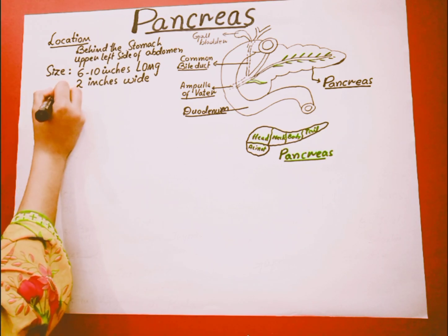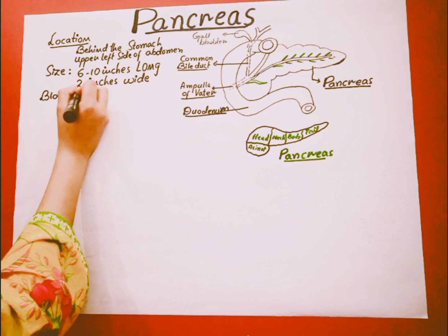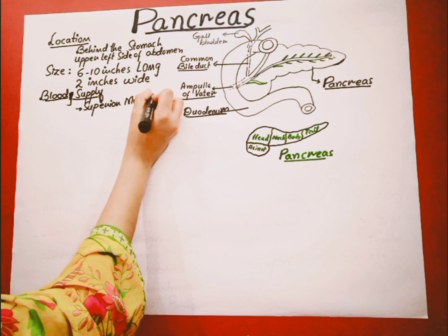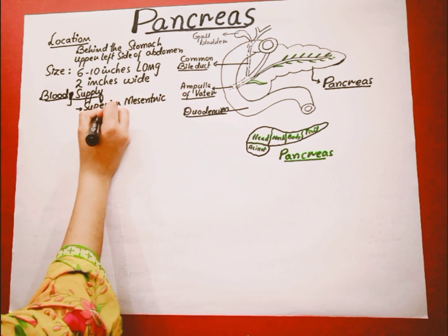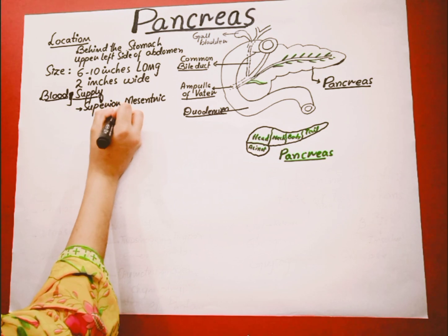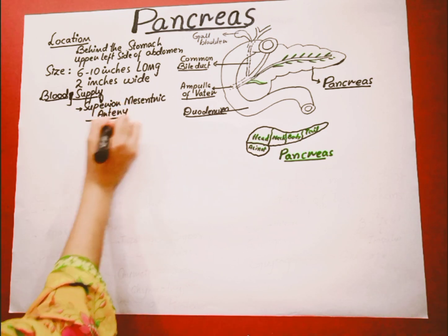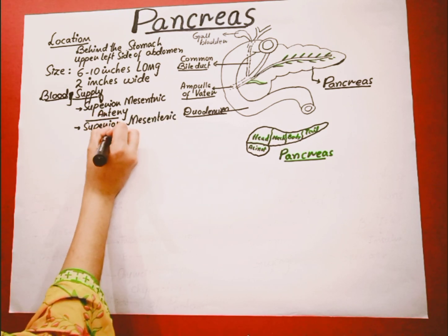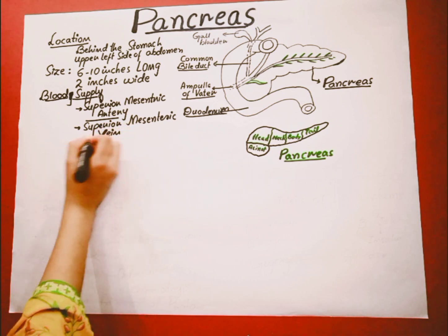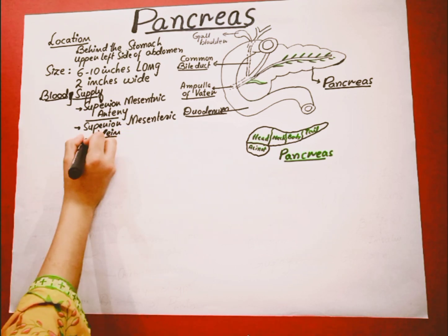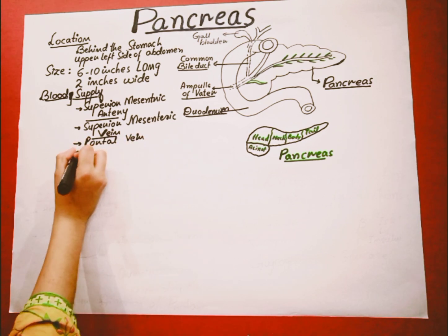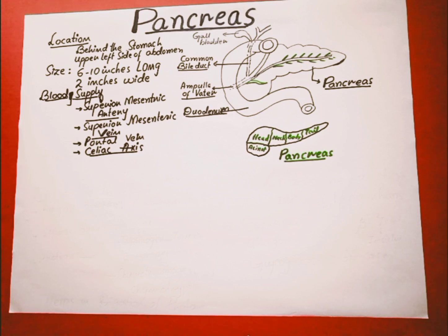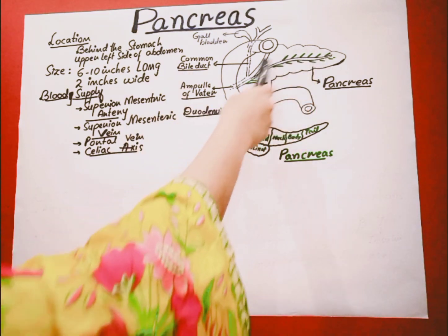The blood supply to the pancreas comes from the superior mesenteric artery, the superior mesenteric vein, the portal vein, and the celiac axis. So these are the blood vessels that supply blood to the pancreas.